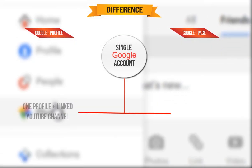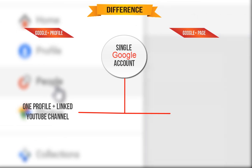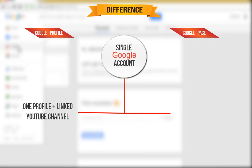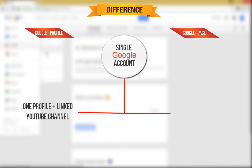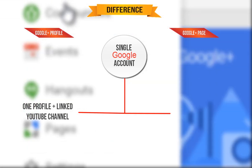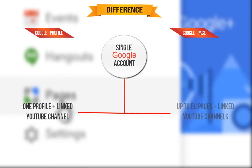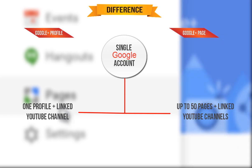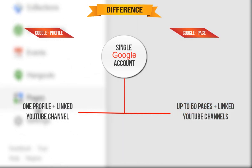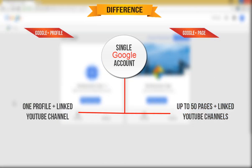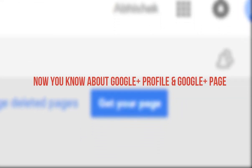You can manage only one profile and one connected YouTube channel from a single Google account. On the other hand, you can manage up to 50 different pages and connected YouTube channels from one Google account. I guess now you can easily differentiate between a Google Plus profile and a Google Plus page.